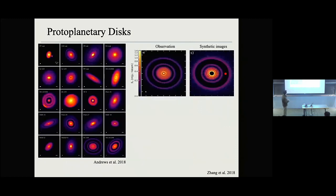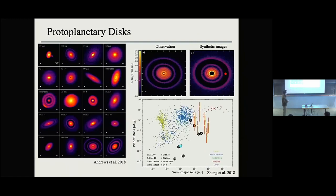We have these beautiful ALMA images with a lot of gaps and rings, and nowadays we can build complicated models trying to reproduce these observations. In this case, we could have a single planet of 100 Earth masses reproduce all the gaps and rings in a single system. With these, we could even probe a potential young planet population and hopefully in future compare these young planet populations with mature planet populations to understand planet evolution and planet migration.